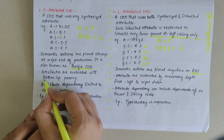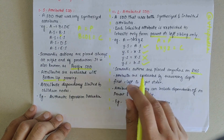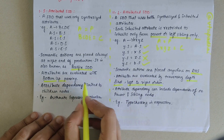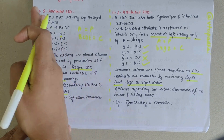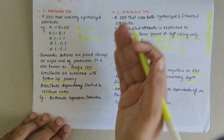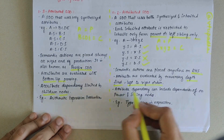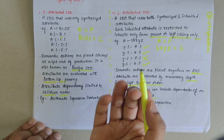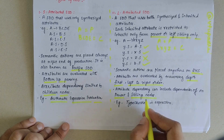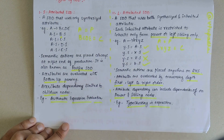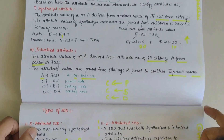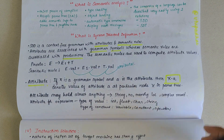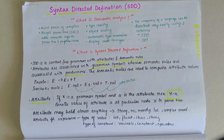In S-attributed SDD, attributes are evaluated based on bottom-up parsing, and attribute dependency is limited to children nodes. In L-attributed SDD, dependency can extend to parent and sibling nodes. An example of S-attributed SDD is arithmetic expression evaluation, while an example of L-attributed SDD is type checking in expressions. I hope you have understood Syntax Directed Definition, its types, and the types of attributes. If you have any doubts, let me know in the comments, and please subscribe to the channel.